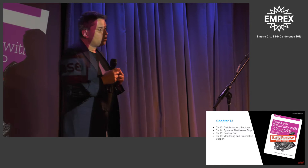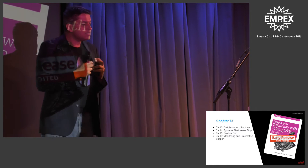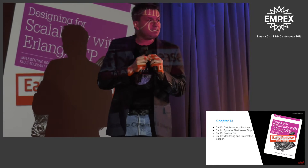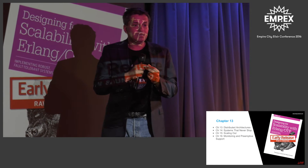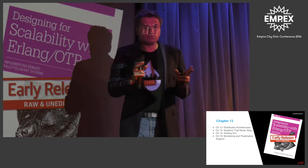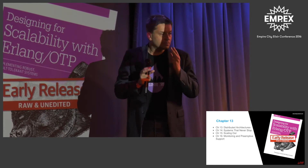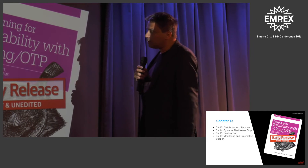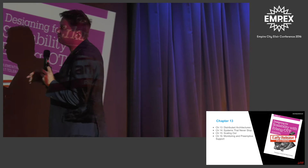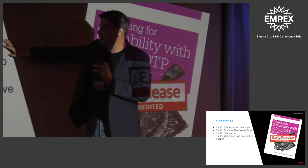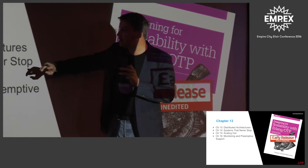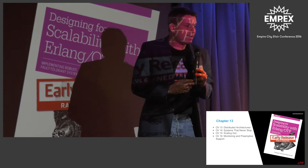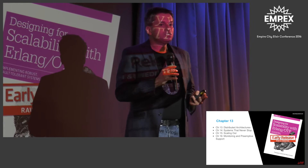Concurrency and distribution will give you two things: they'll give you availability and scalability. That's what these four chapters boil down to. What I'm going to cover here are distributed architectures, systems that never stop, and scaling out.